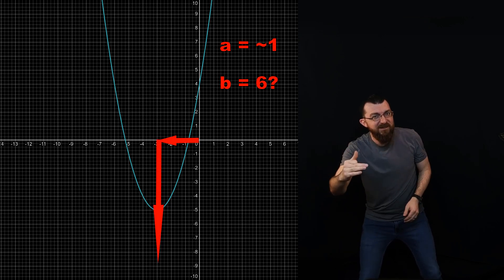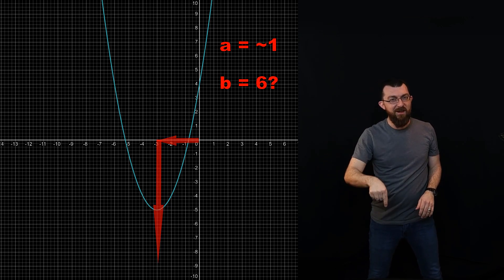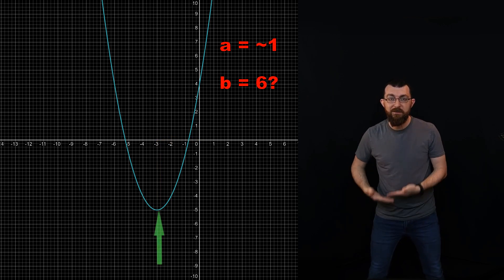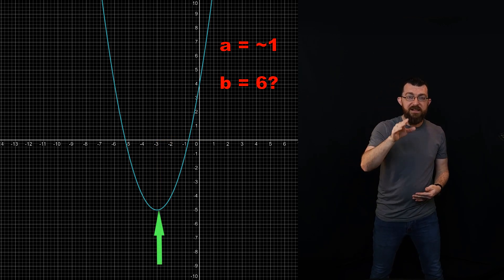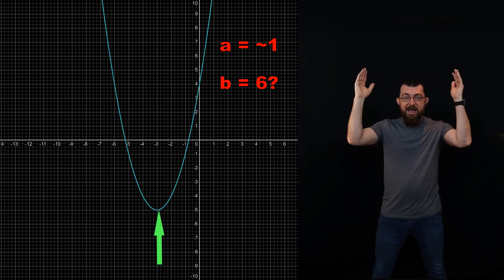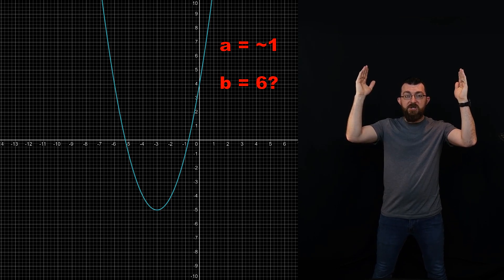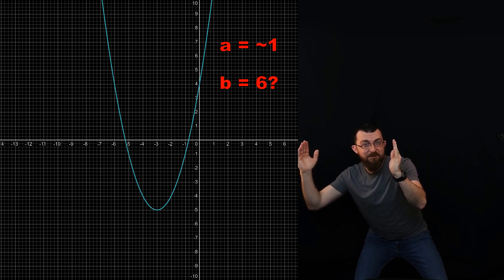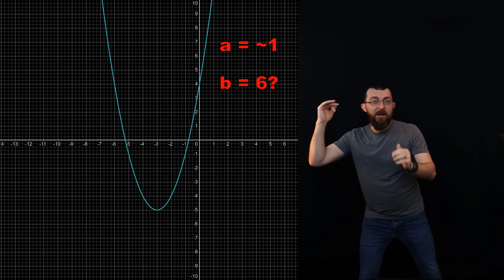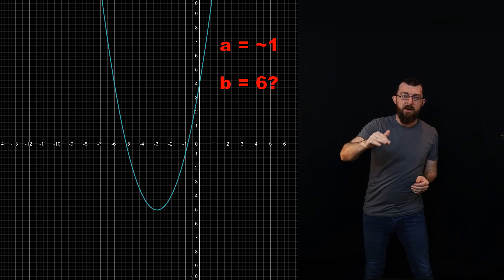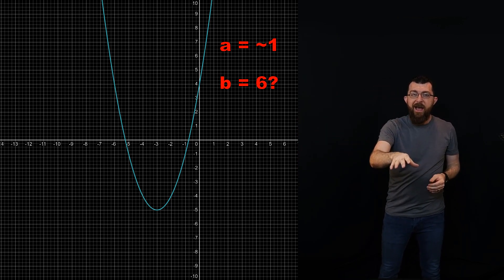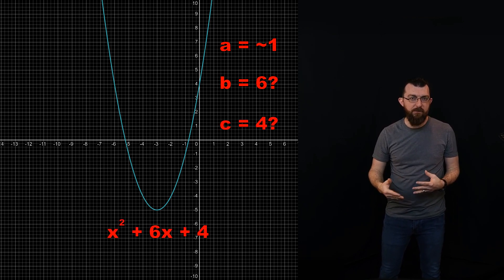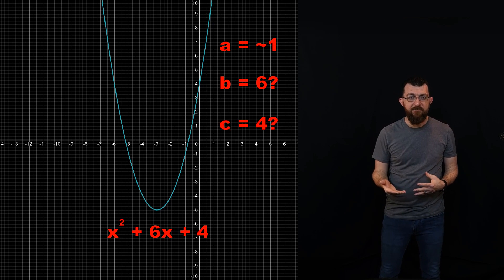If you notice though, the vertex is not down at negative 9. It's only down at negative 5. So it has been lifted up a little bit. That's what C does. Okay, so A has kept it in its original shape. B has shifted it down and to the left, but too far. And C has brought it up a little bit. The value of B is some positive number. In this case, probably 6. And the value of C is another positive number. In this case, probably 4. To bring it up from negative 9 to negative 5.